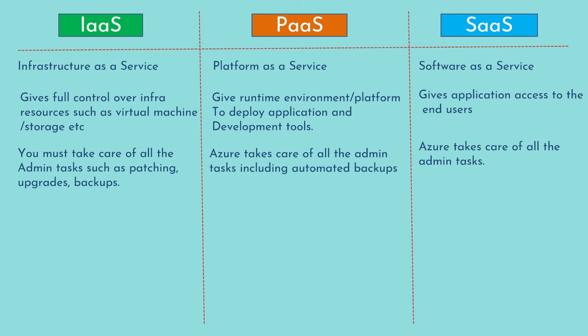In IaaS, you must take care of all administrative tasks such as server patching, upgrades, and backups. Patching means making sure all your software and operating system packages are up to date with security and vulnerability fixes. In PaaS and SaaS, Azure takes care of all admin tasks. So when you need full control over your operating system, you go with IaaS. When you do not want to manage admin tasks, you go with either PaaS or SaaS.